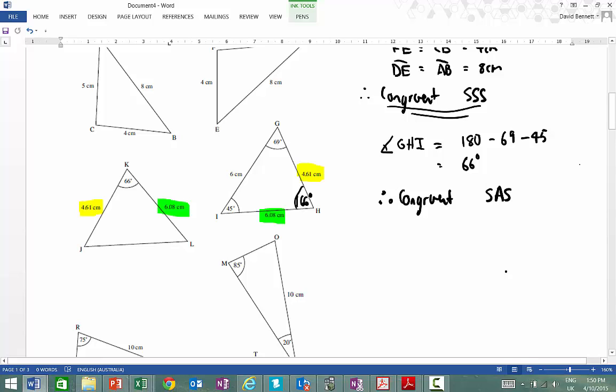therefore these things are congruent from side angle side. Now obviously with your proof you have to say that GH is equal to KJ, which is equal to 4.61, you need to say that KL is equal to HI, which is equal to 6.08.